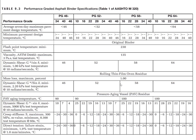For binders that have gone through the short-term aging process, after performing the rolling thin film oven test, we need to perform the dynamic shear rheometer test at the maximum temperature for each grade, and the rutting parameter should be larger than 2.2 kPa. Also, after the rolling thin film oven test, we need to measure the mass loss, which should be less than 1%.